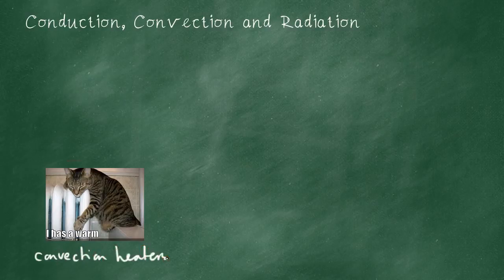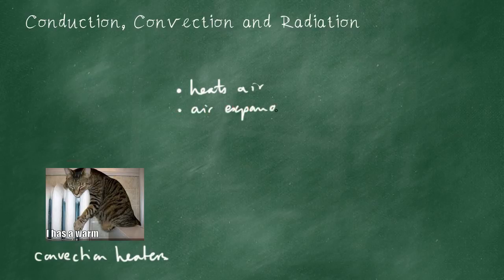A convection heater works by heating the air near it. The air near it expands. Remember, it's the air that expands, not the particles that expand. Air expands and becomes less dense.